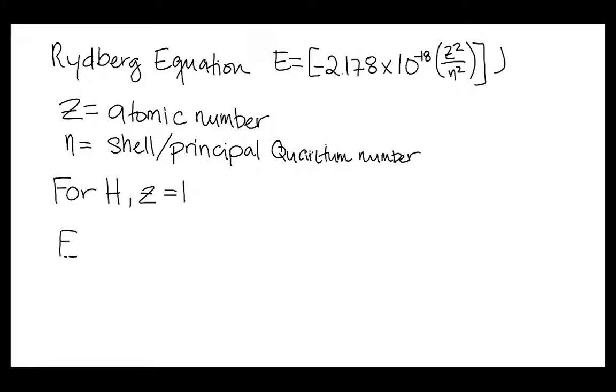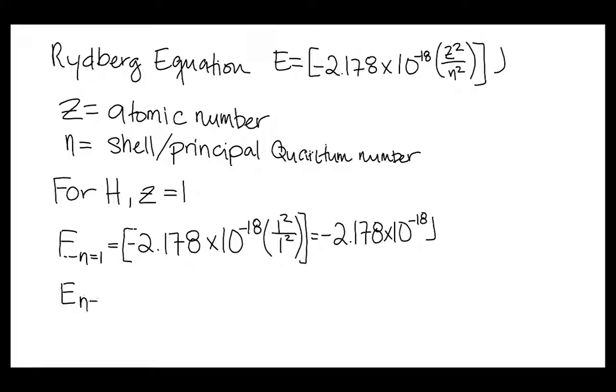To calculate the energy of the first shell, which is n equals 1, we will plug in our values into the equation. So we will get negative 2.178 times 10 to the negative 18 times 1 squared over 1 squared, which equals negative 2.178 times 10 to the negative 18 joules.